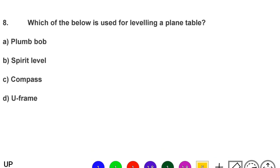Next question: which instrument is used for leveling a plane table — option A: plumb bob, option B: spirit level, option C: compass, option D: U-frame. The correct answer is option B, spirit level.